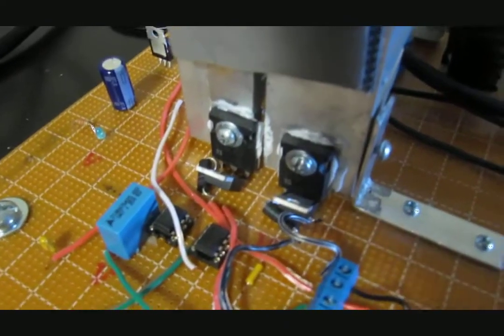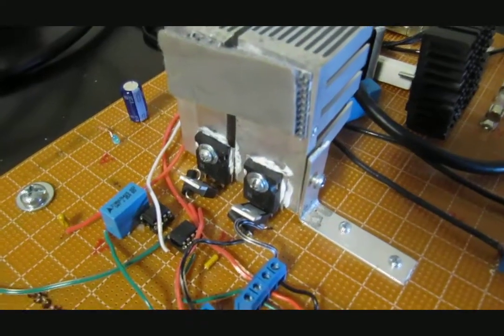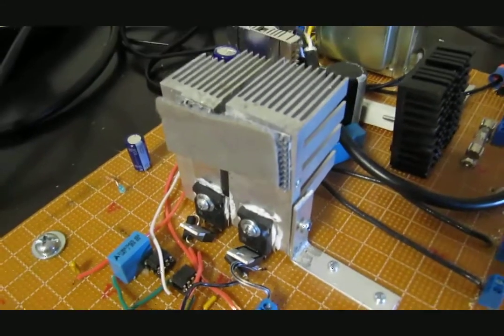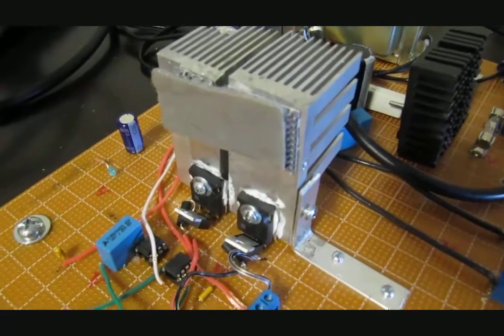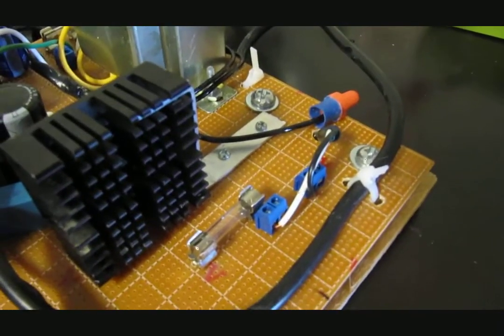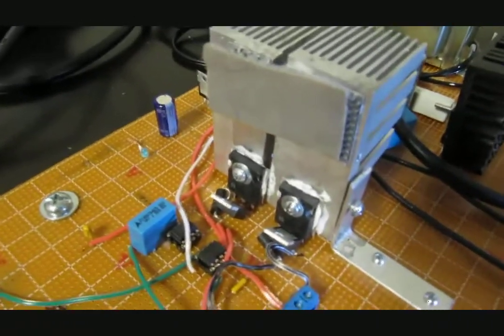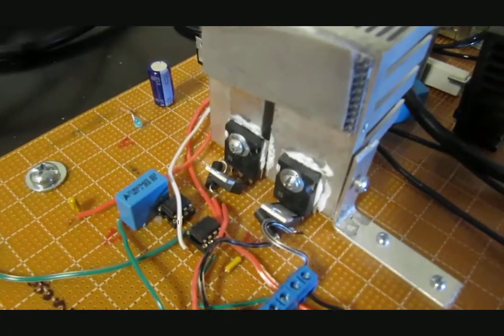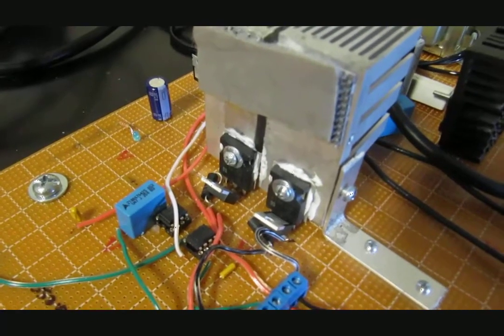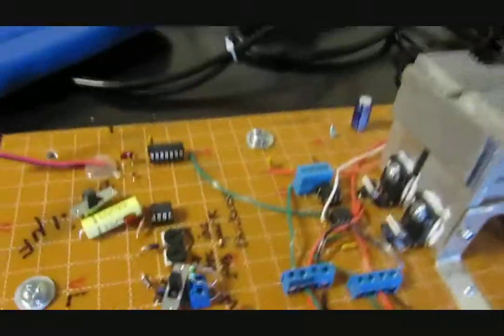The IRFP250s that are shown in Steve Ward's circuit, I ended up blowing all of mine, and when they blow they are pretty much open short and they blow the fuses in the house. So you have to be careful. I've got a 7.5 amp fuse, and that was tripping my breaker box. So I thought I'd try and use IRFP460s instead, so I'm using those right here.